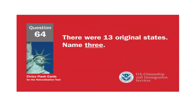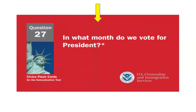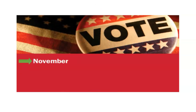There were 13 original states. Name three. New York, Virginia, and Georgia. In what month do we vote for president? In November.